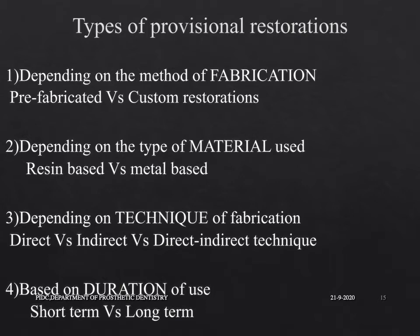Provisional restorations can be classified based on the method of fabrication as prefabricated and custom-fabricated restorations. Depending on the type of material used, they can be classified as resin-based and metal-based. Depending on the technique of fabrication, they are classified as direct technique, indirect technique, and direct-indirect technique. Based on the duration of use, provisional restorations are classified as short-term and long-term restorations.